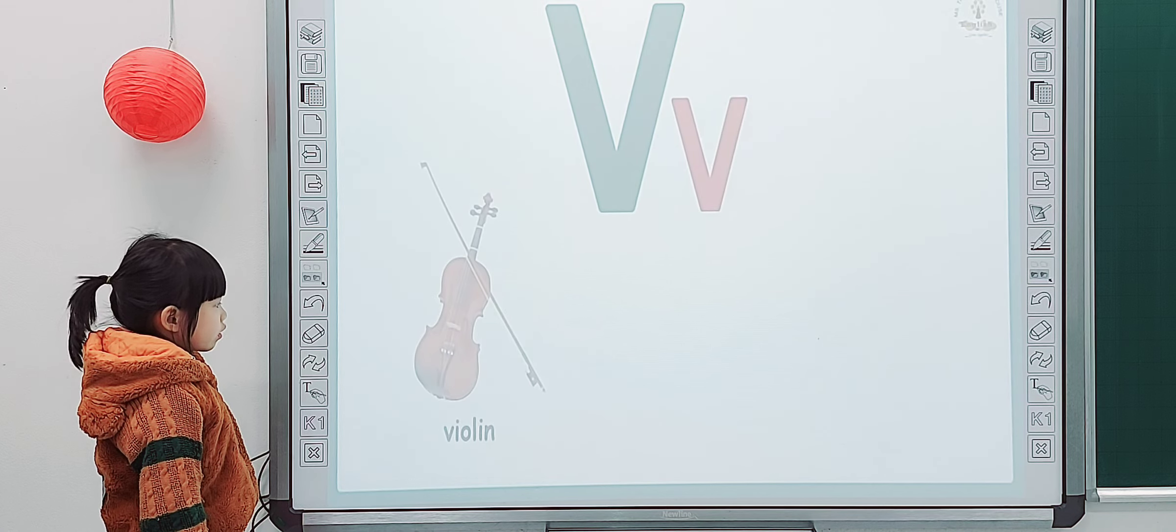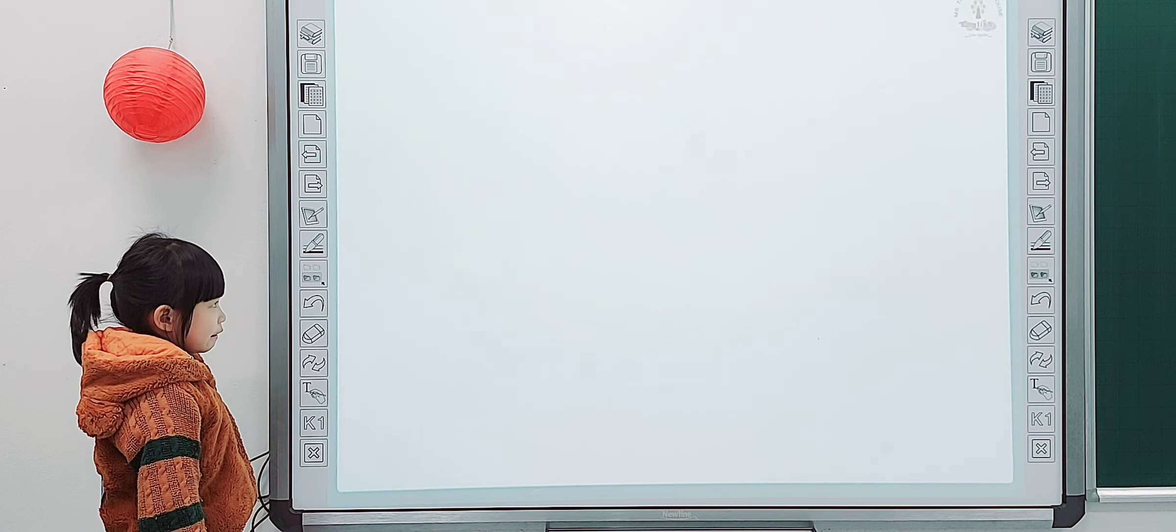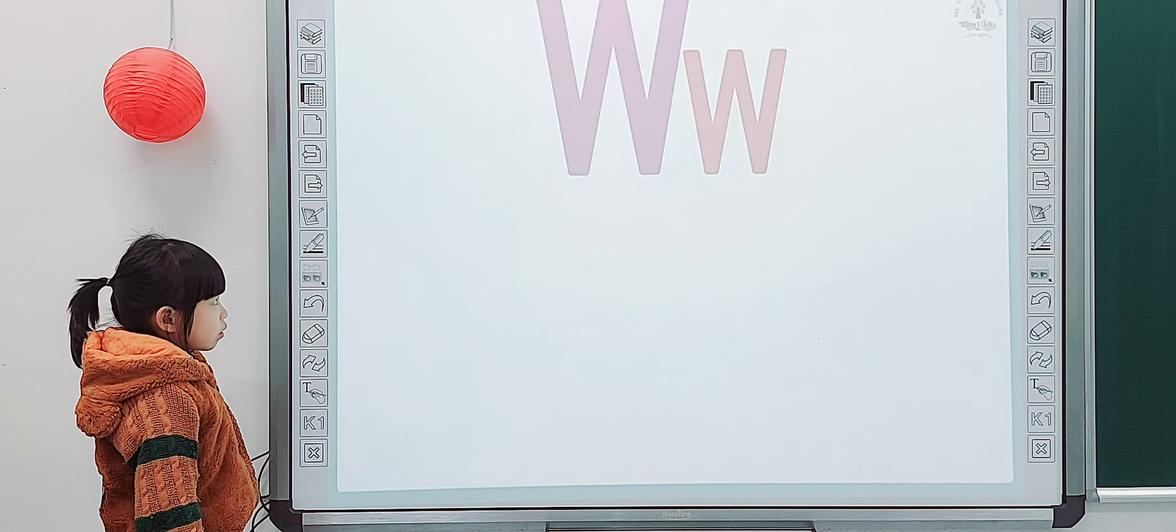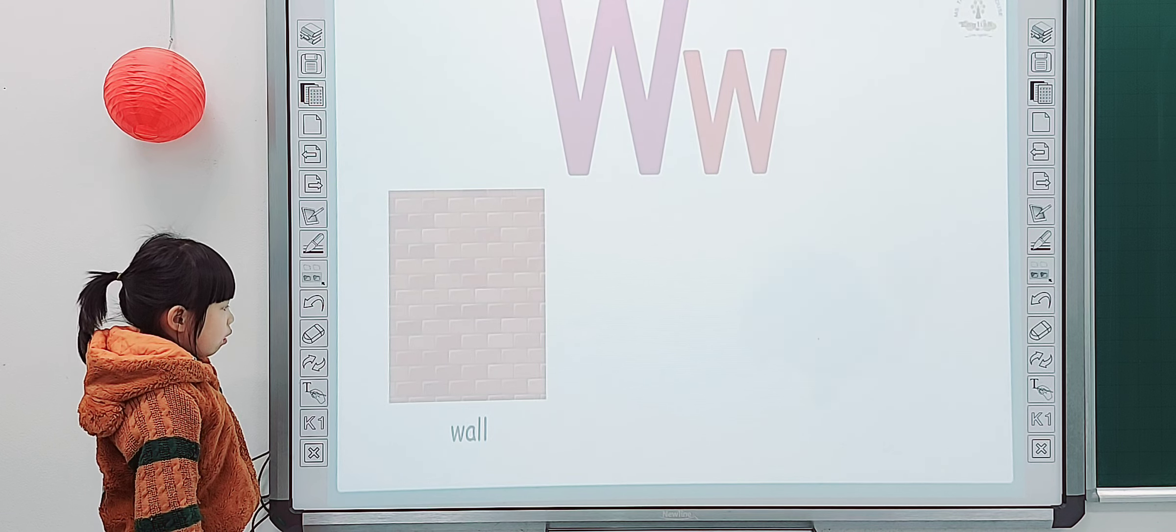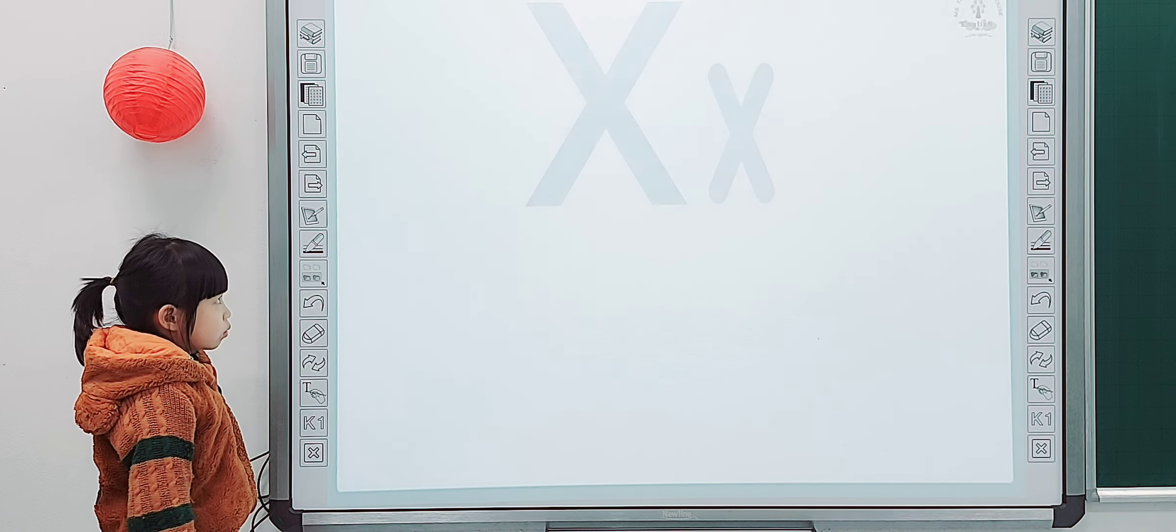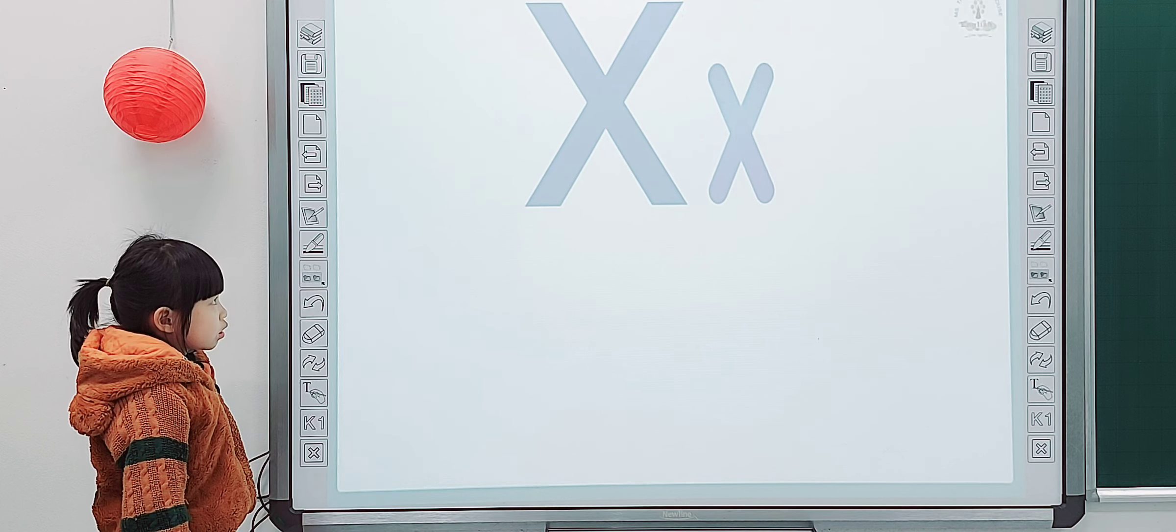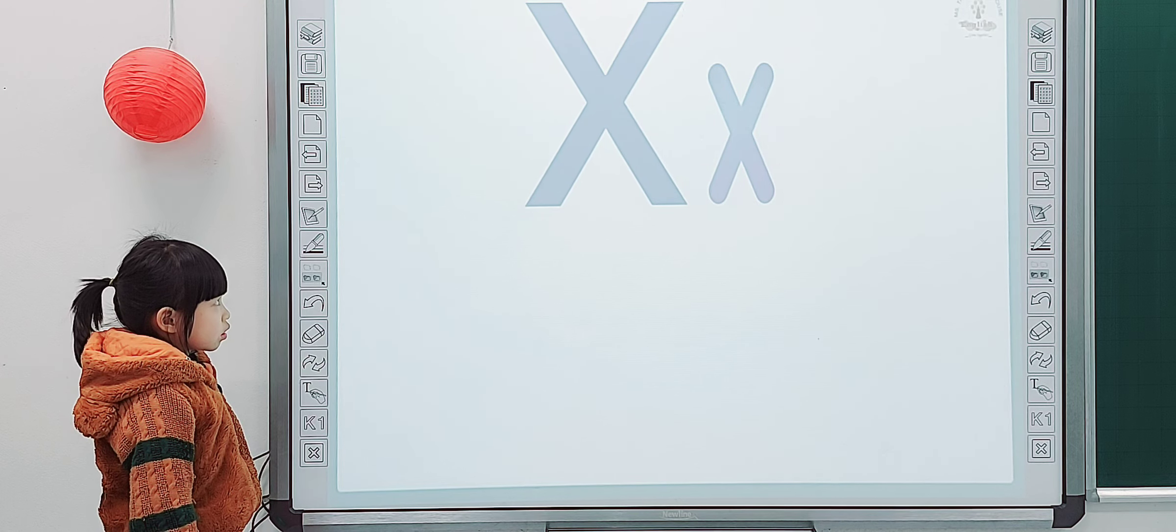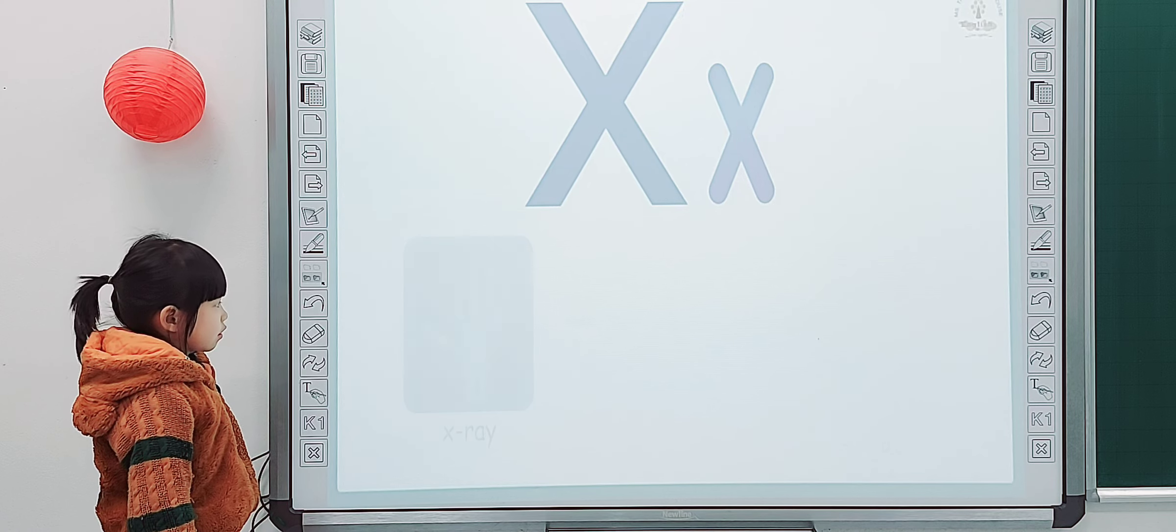And what is it? V. Van. And next one. W. World. Good. Next one. What is it? X.